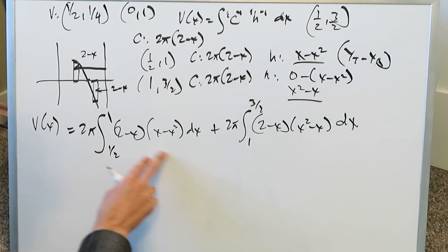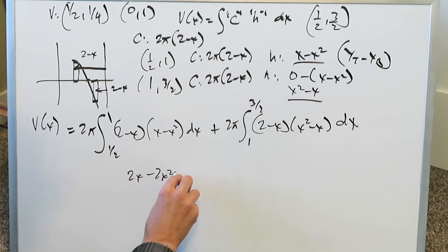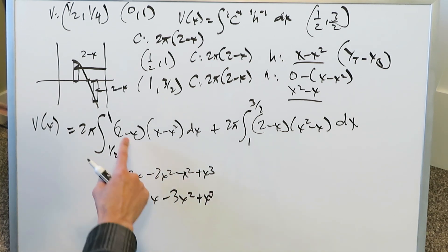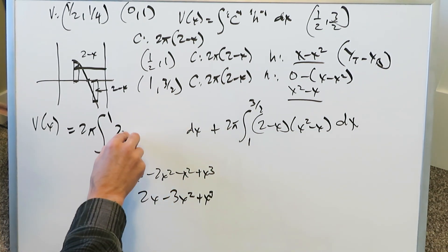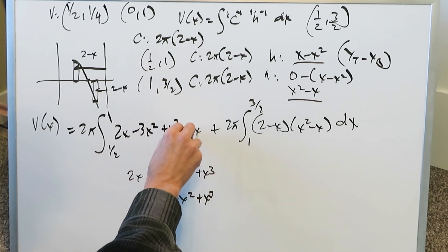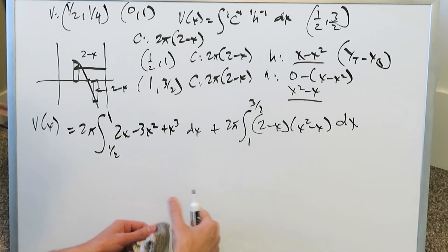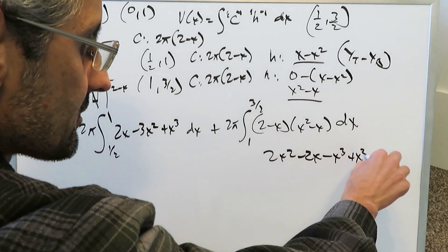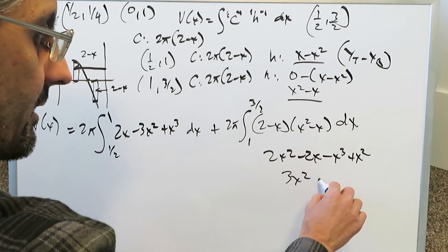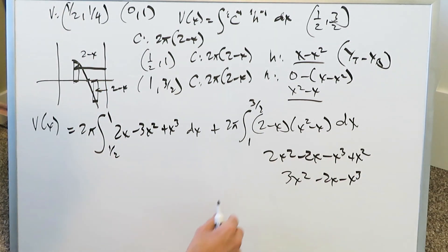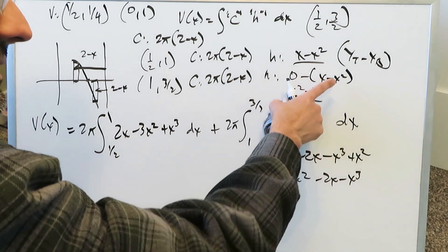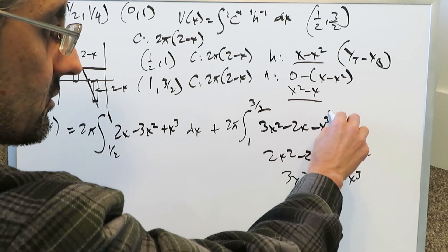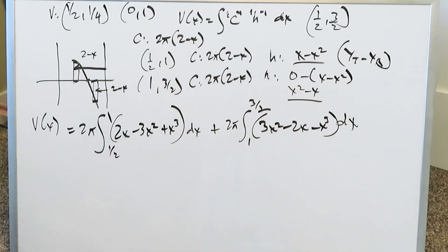Opening up and factoring the first integrand: (2 minus x)(x minus x squared) expands to 2x minus 2x squared minus x squared plus x cubed, which simplifies to 2x minus 3x squared plus x cubed. The second integrand (2 minus x)(x squared minus x) expands to 2x squared minus 2x minus x cubed plus x squared, consolidating to 3x squared minus 2x minus x cubed. Signs are flipped as expected from swapping YT minus YB.